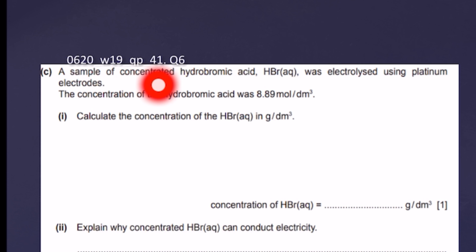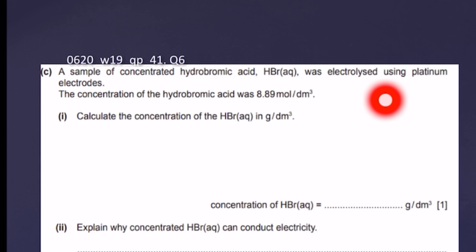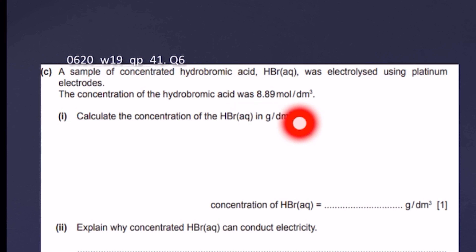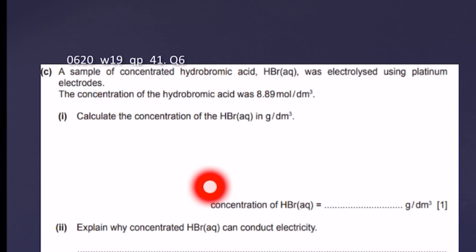This question is from November 2019 paper 4 variant 1, question number 6 part c. A sample of concentrated hydrobromic acid was electrolyzed using platinum electrodes. The concentration of hydrobromic acid was 8.89 mol/dm³. Calculate the concentration of hydrobromic acid in grams per cubic decimetre. Although this question is not strictly from electrolysis, it will also be solved here.